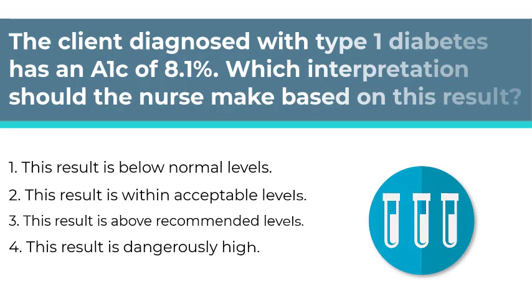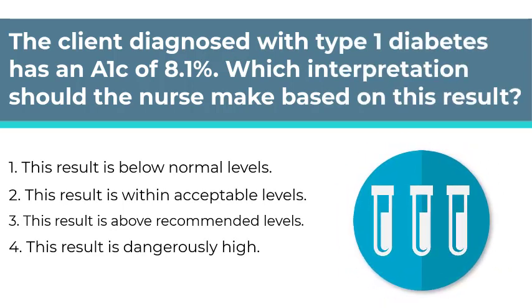Here's our first question. The client diagnosed with Type 1 diabetes has an A1c of 8.1%. Which interpretation should the nurse make based on this result? Number 1: This result is below normal levels. Number 2: This result is within acceptable levels. Number 3: This result is above recommended levels. Number 4: This result is dangerously high. This is an analysis question in the assessment phase of the nursing process. To answer this question, you must know A1c diagnostic laboratory values to determine if the data given is normal or abnormal.